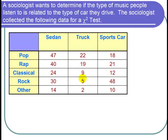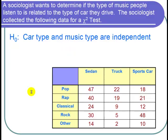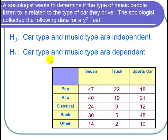So let's start with the null hypothesis. We want to find out if the type of car somebody owns and the type of music someone listens to, we want to find out if those two categories are independent. So H₀ is that car type and music type are independent. And H₁ is that car type and music type are dependent.